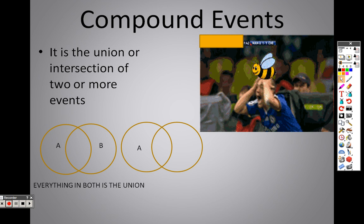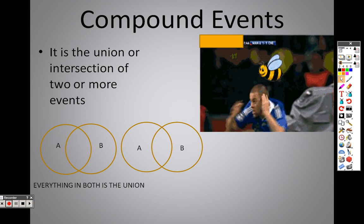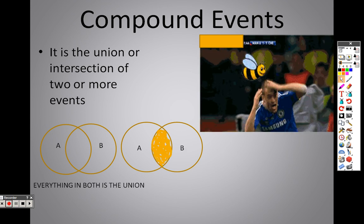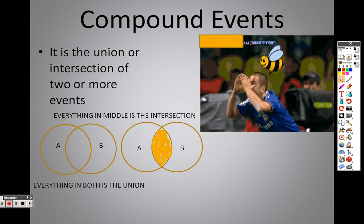However, taking a look at A and B again, the intersection of an event is everything that's only in between them, what they have in common. And that's everything in the middle.